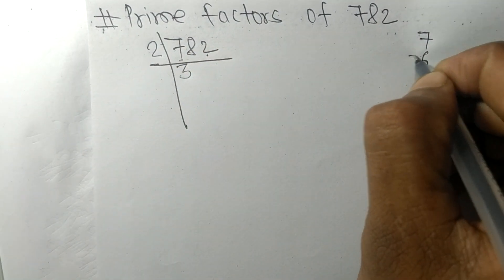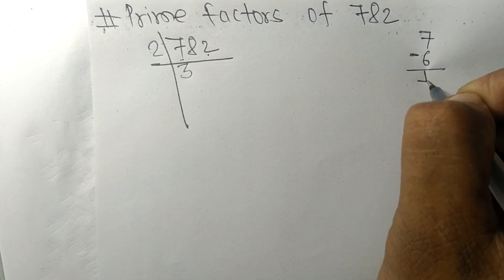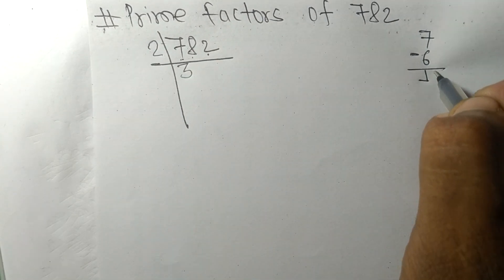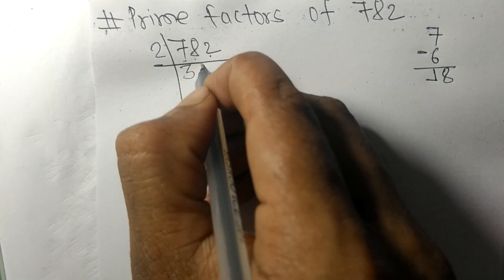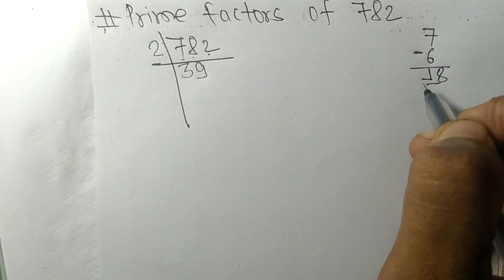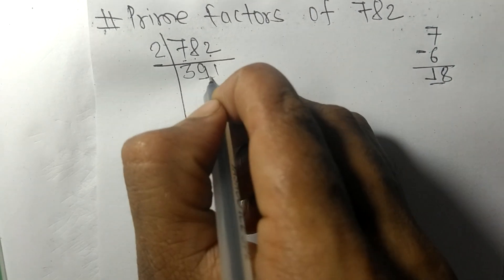On subtracting we get 1, and this 8. 18, so 2 times 9 means 18, and 2 times 1 means 2.